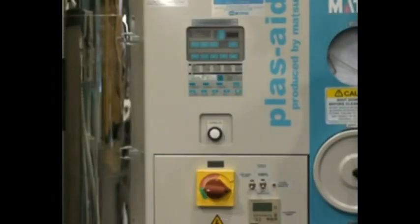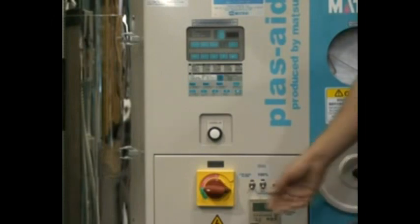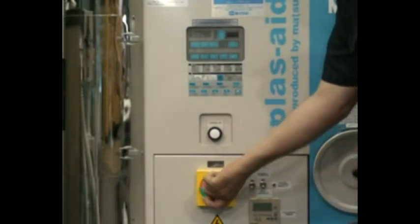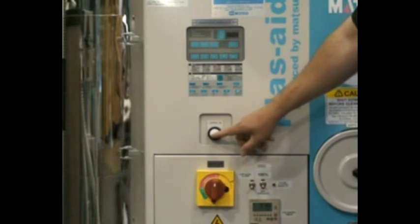After all the necessary components and utilities have been installed, it is time to turn on the unit. Start by turning the main disconnect switch on the front of the unit to on. Next, hit the control on button to energize the power.